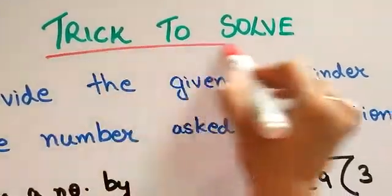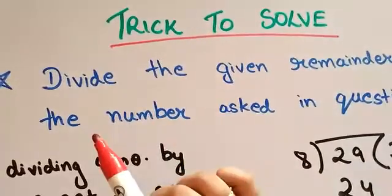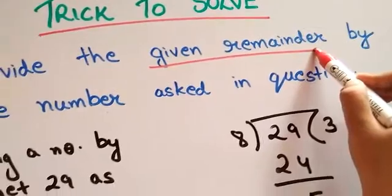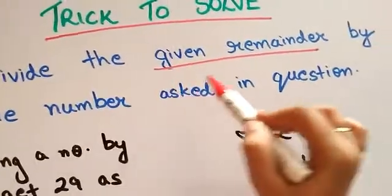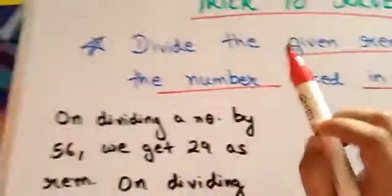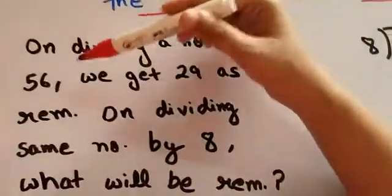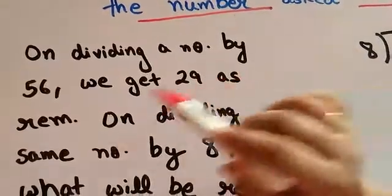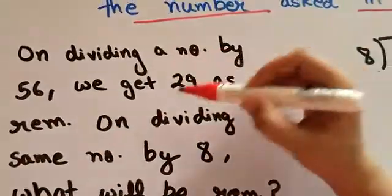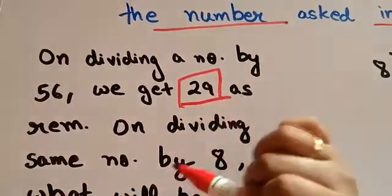There is a trick to solve such questions. Just simply divide the given remainder by the number which is asked in our question. Our question is this: on dividing a number by 56, we get 29 as the remainder. So just select it.